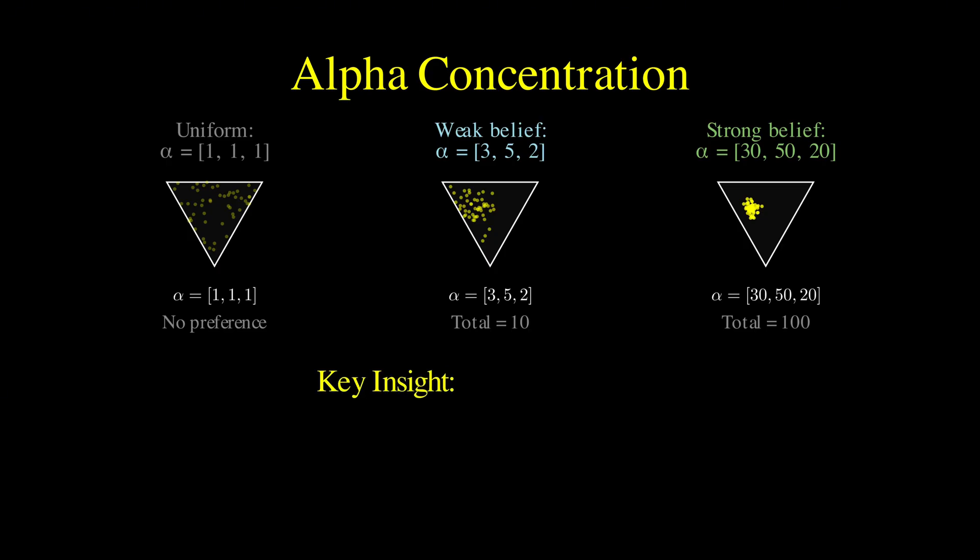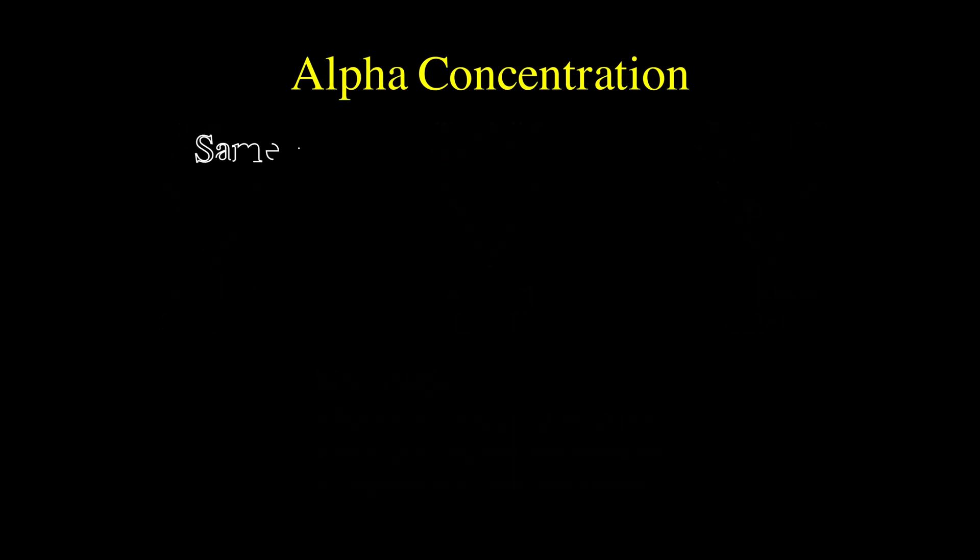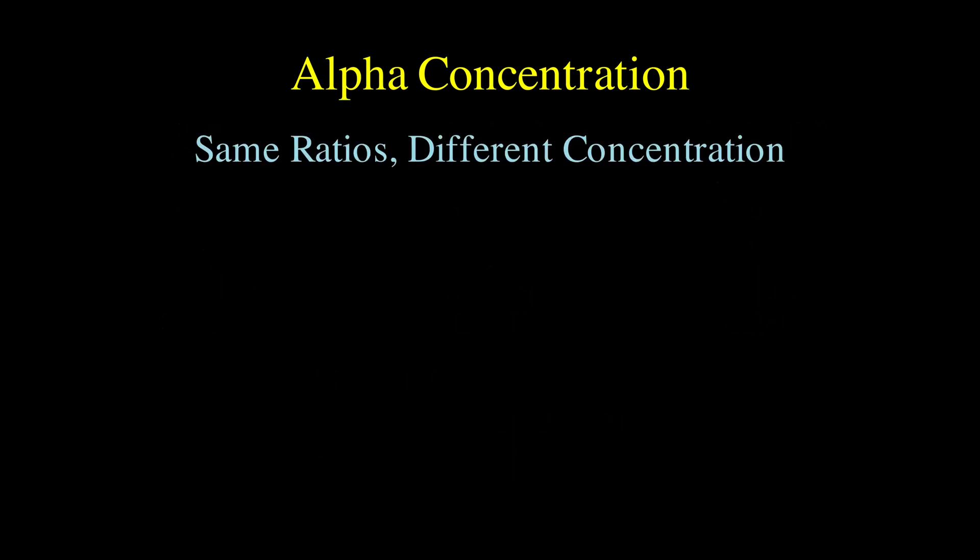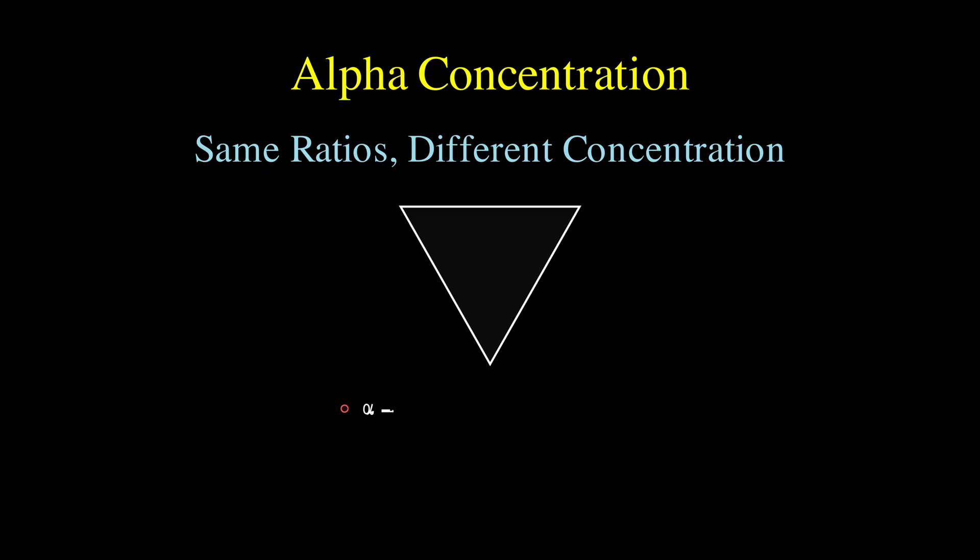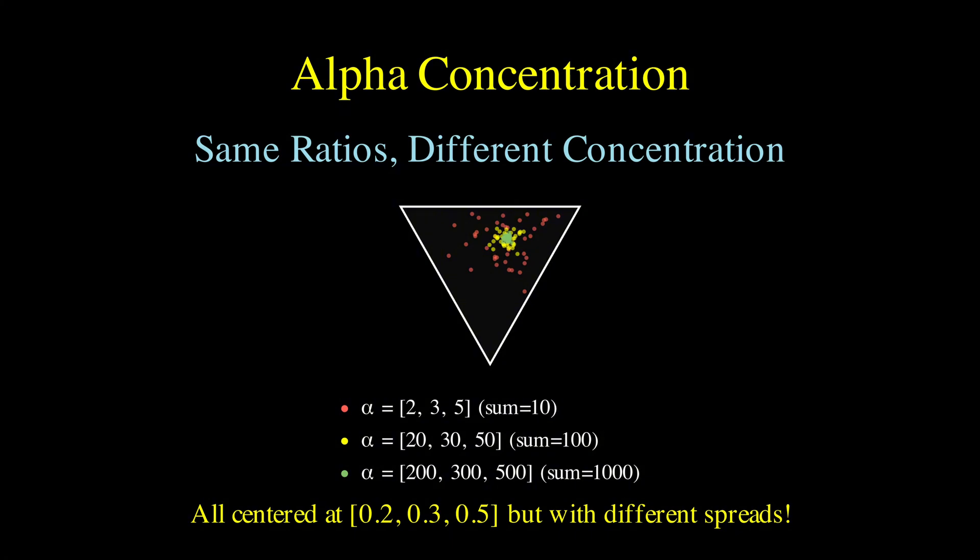The key insight is that the ratios between alphas determine where the distribution is centered, while the total sum controls how tightly it's concentrated there. This is like having a confidence dial. Small sums mean you're uncertain and samples spread widely, while large sums mean you're confident and samples cluster tightly. You can even scale any alpha vector by 10 or 100, and while the center stays exactly the same, the spread becomes dramatically tighter, perfectly capturing how additional observations increase your confidence without changing your best estimate.